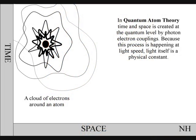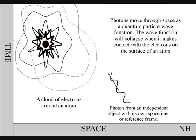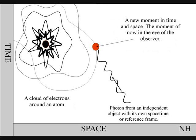In this diagram of an atom, a photon expands through space as a wave-particle function of light. When it makes contact with the electrons on the surface of the atom, the wave function will collapse into new photon particles and into new moments in time and space.